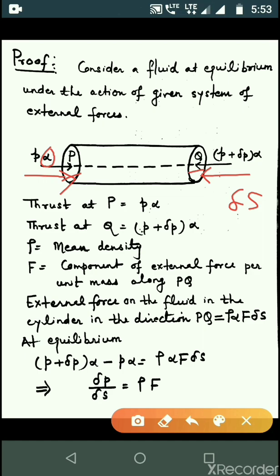Since the cross sectional area is alpha, the thrust on P is P alpha, and the thrust on Q is P plus delta P multiplied by alpha. We have rho equal to mean density.